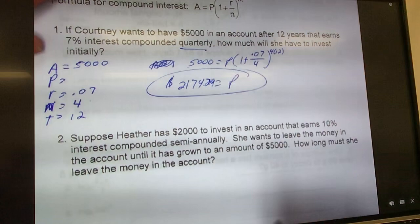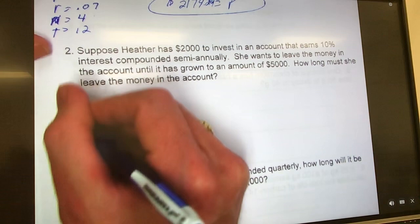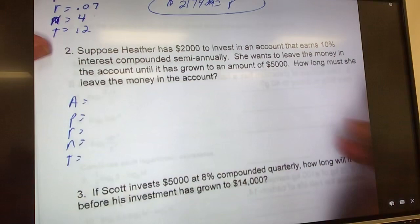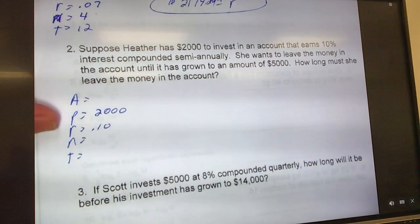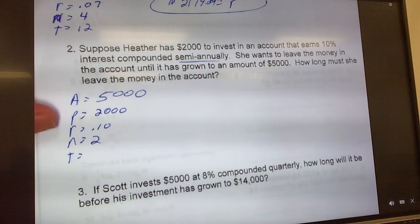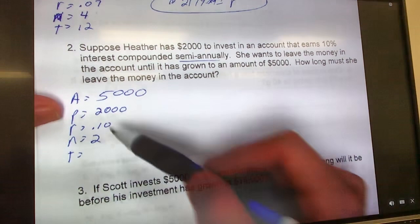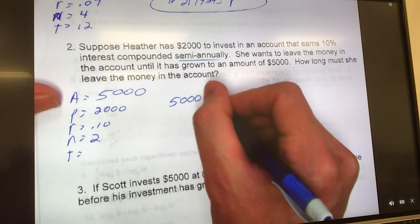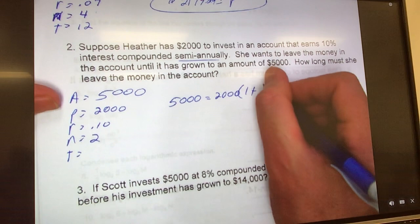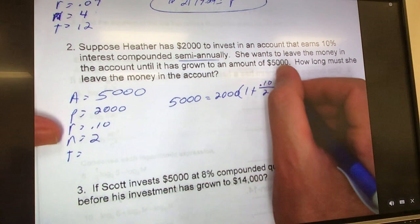All right, so now here we go again: A, P, R, N, T. Suppose Heather has $2,000 to invest, so she has $2,000 as her principal. Account earns 10% interest, so 0.10, compounded semi-annually, that is two times a year. She wants to leave the money in the account until it's grown to $5,000, so that you can see this is different than we've done before. We've never had both our A and P. We're always either solving for A or P. So now that tells me right now I have to use log to solve it. How long must she leave it in? We don't know what our T is.